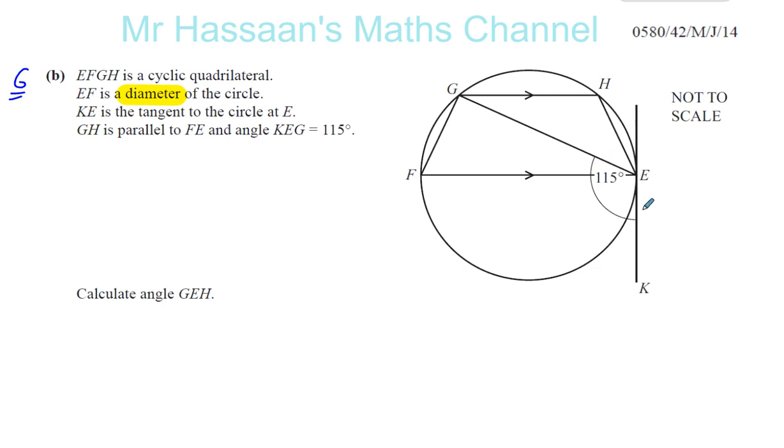KE is the tangent to the circle at E. GH is parallel, which you can see, but that's again a very important property when we come to angles. GH is parallel to FE, and angle KEG is 115, which is marked.